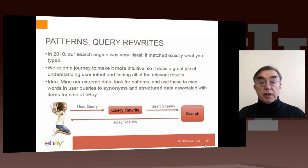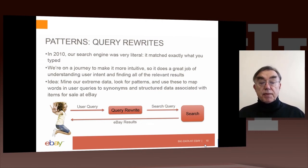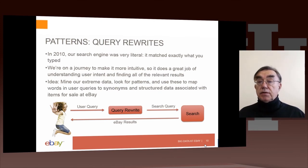eBay points out that they can improve on that by learning from previous users — what they typed and what they really meant. The idea is to actually understand what you intended and give you what it thinks you wanted. It does that by mining what they call 'extreme data' — effectively big data — looking for patterns, and mapping the words in user queries, synonyms, and structured data associated with items. That's what query rewrite is.